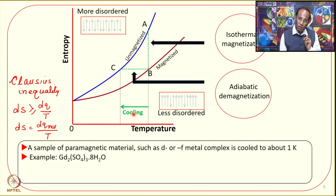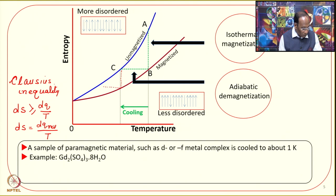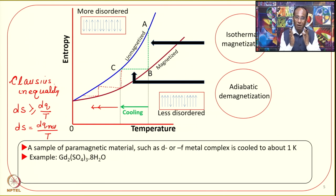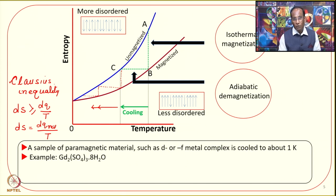If we repeat these steps — magnetization, then adiabatic demagnetization — another increment of cooling is produced. Repeating again produces yet more cooling, so we keep moving towards lower and lower temperatures. This example highlights the technological applications of the third law of thermodynamics, demonstrating how it explains the process of achieving very low temperatures.